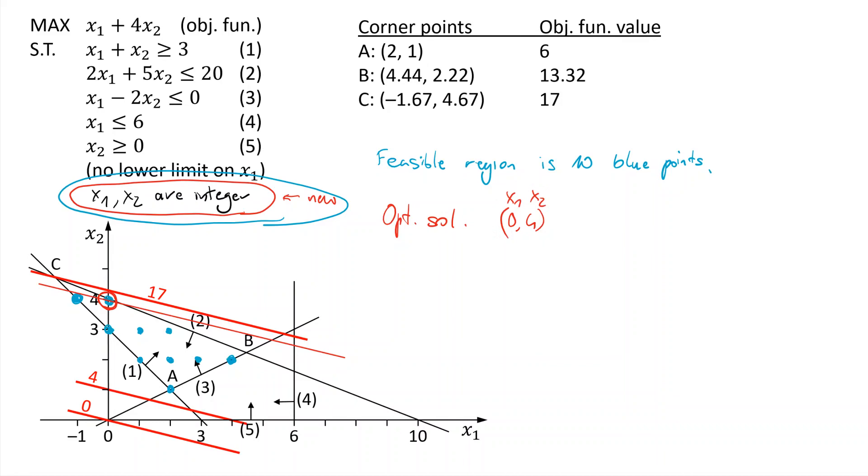And the value, easy to determine, the objective value is 0 plus 4 times 4, which is 16. So notice what we had before, when the region was this blue triangle, continuous region. Before, this was the value we achieved, and this was optimal. Now, with the integer constraint, the optimal solution changed. And the value, 16, became worse. Because, not surprisingly, when you add constraint, when you restrict, the value can stay the same or can become only worse. It can never become better. So it lowered it.